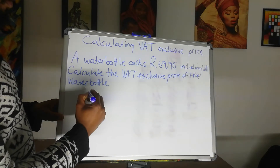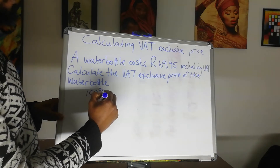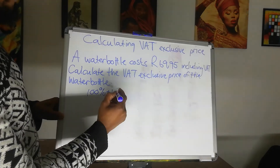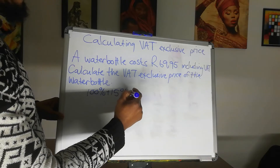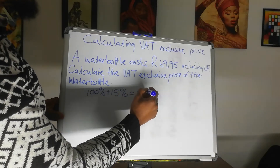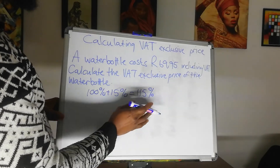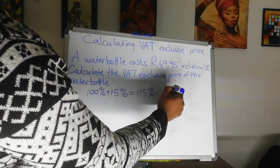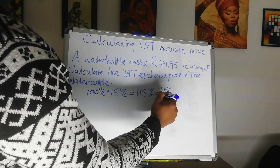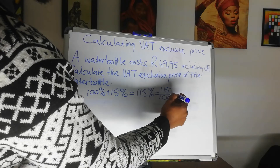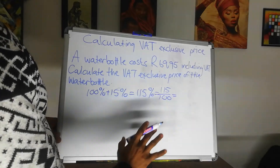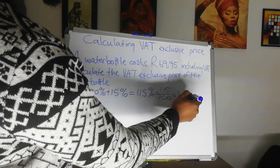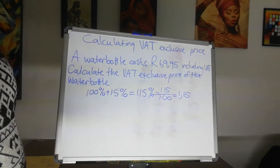So we start off by saying 100% plus 15%, and that equals 115%. This 115% will be converted into a fraction, which is 115 over 100. And therefore, we convert it further into a decimal value, which is 1.15. This is where the 1.15 comes from.